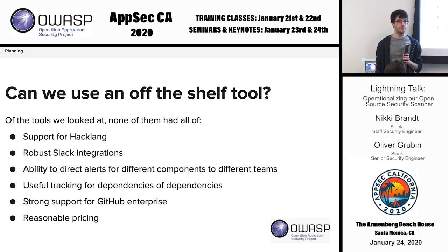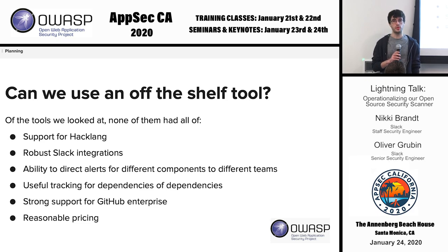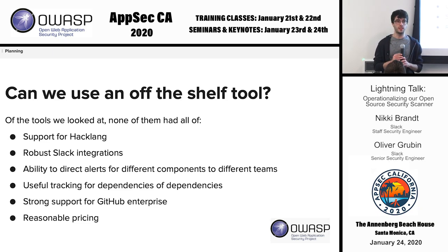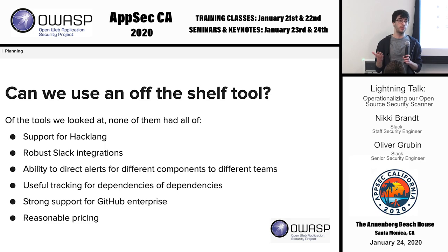Some of you are probably thinking, why did they try and build this? There are a million tools on the internet for this, and it is something we considered. But we had some requirements which off-the-shelf tools couldn't provide. Slack's written in Hacklang, which is used by Facebook, Slack, and some small other companies, but it's not widely used in the industry. So there's not a big market for open source scanning tools to check for Hacklang. There was nothing out there which had the support we needed. There were some things which could do JavaScript support, but we still need to track the Hacklang and PHP dependencies.